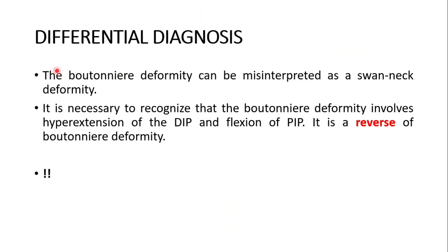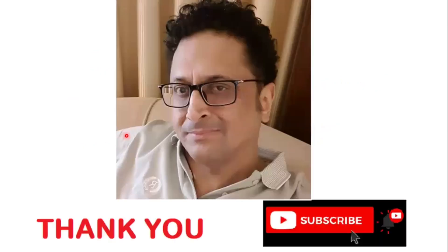Regarding differential diagnosis: the boutonniere deformity can be misinterpreted as a swan neck deformity — in fact, they are both the reverse of each other. It is necessary to recognize that boutonniere deformity involves hyperextension of the distal interphalangeal and flexion of the proximal interphalangeal joint, which is the reverse of swan neck deformity. These five tendon lesions and finger deformities are now completed. In coming lectures we will take on some other very interesting topics. Please stay tuned and support the channel. Thank you very much.